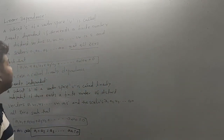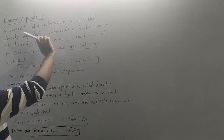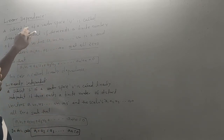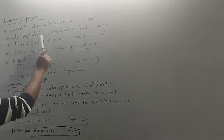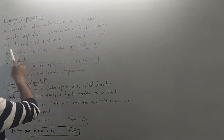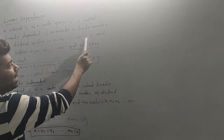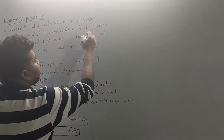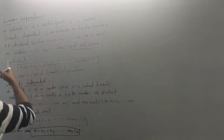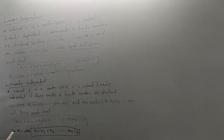The first definition: a subset S of a vector space V is called linearly dependent if there exists a finite number of distinct vectors U1, U2, U3, ... Um in S and scalars A1, A2, A3, ... Am, not all zero, such that the linear combination equals zero.